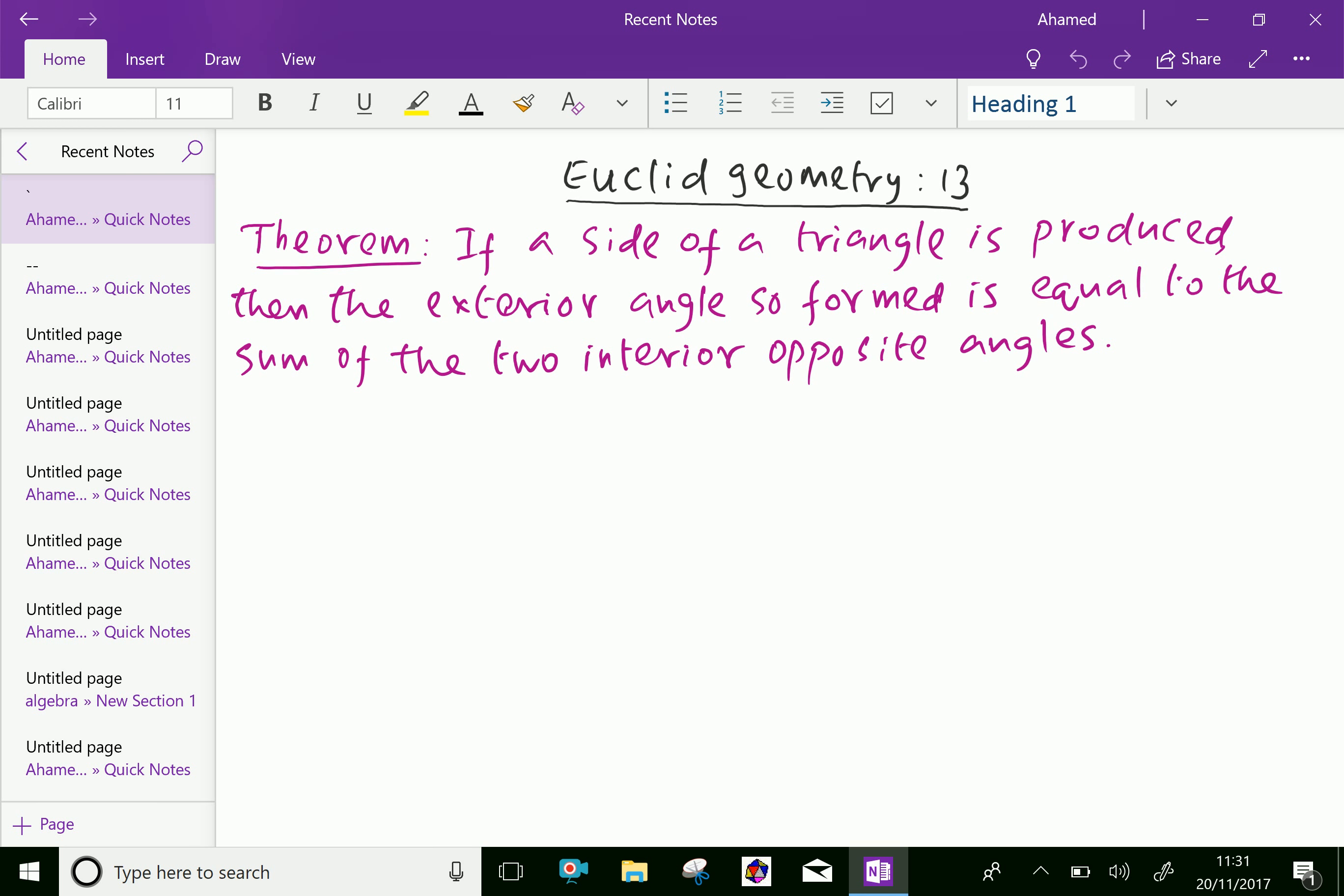If a side of a triangle is produced, then the exterior angle so formed is equal to the sum of the two interior opposite angles.